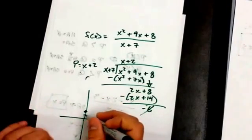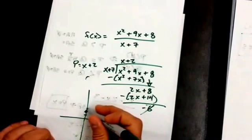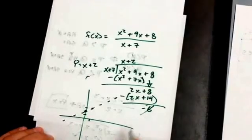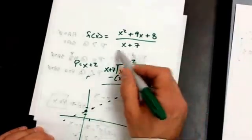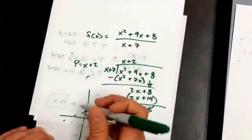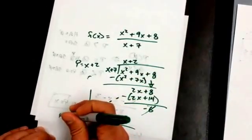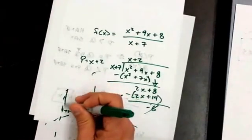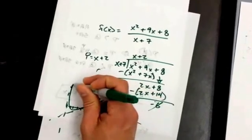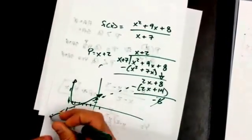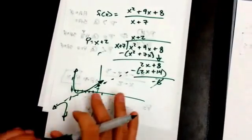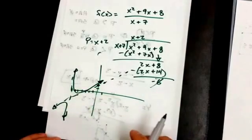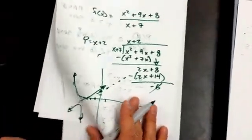So I have a slant asymptote at Y equals X plus 2. To graph that, I go to 2 on the Y-axis — the Y-intercept of 2 — go up 1 over 1. I'm going to have an imaginary line right there that it's never going to reach. I also need to look at my vertical asymptote, which is at X equals negative 7 — another imaginary line it never reaches. The graph is going to look like this on either side. We'll get more into graphing tomorrow.